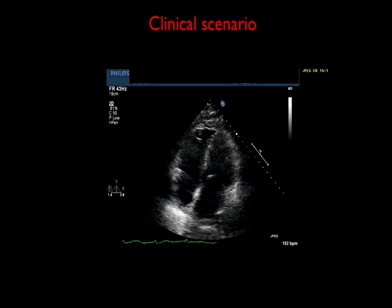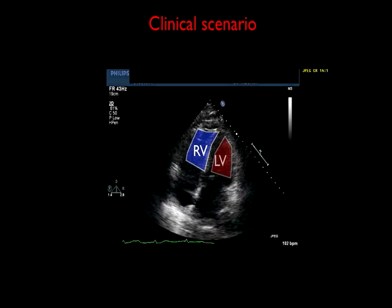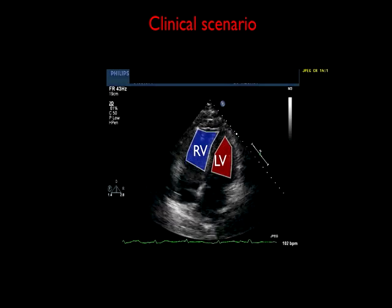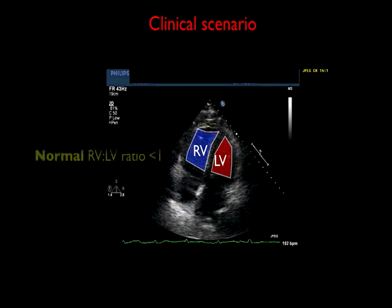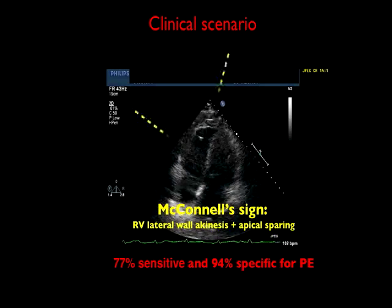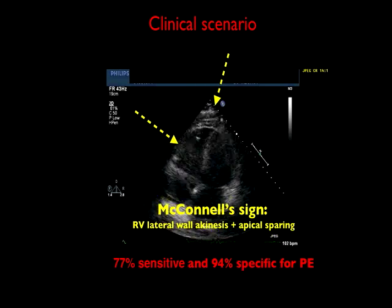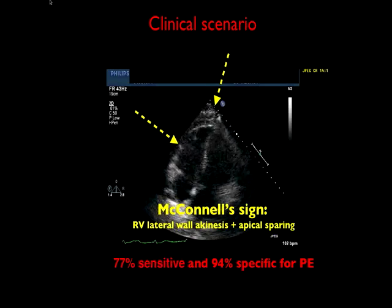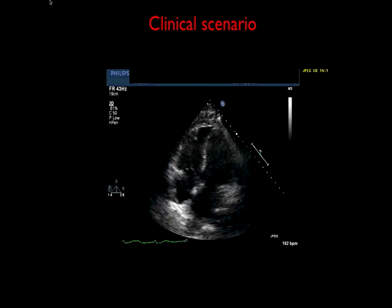Here's a clinical scenario. A patient who is clinically unstable has the following echo. It shows right ventricular enlargement and apical hyperkinesis with right ventricular free wall hypokinesis or akinesis, which we know as McConnell's sign. Keep in mind the normal RV to LV ratio is less than 1. Some reports say that McConnell's sign has a fairly high sensitivity and specificity for PE, but we also need to keep in mind that these reports do not include patients with right ventricular infarct, and that can mimic this appearance.